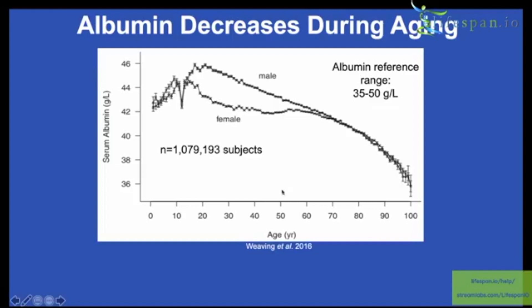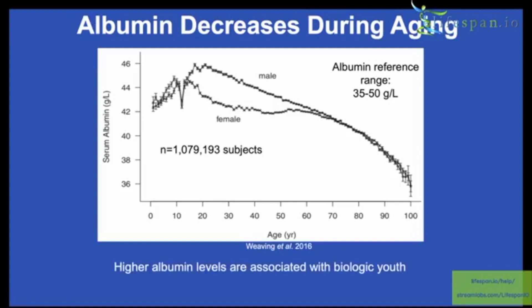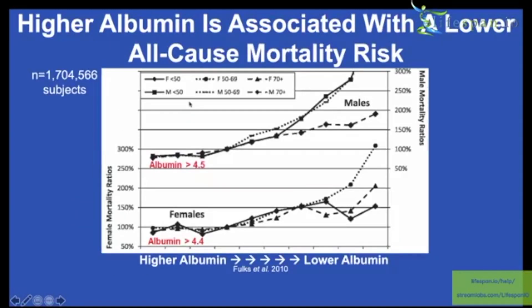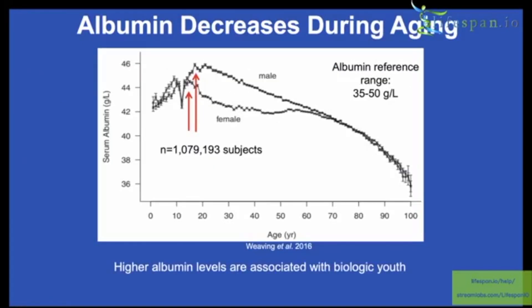For example, this albumin study has a sample size of more than one million subjects. The reference range for albumin is 35 to 50 grams per liter. But what's optimal? Higher albumin levels are associated with biological youth. We can see that here — albumin levels on the y-axis versus age. We can see the female plot and the male plot. Males tend to have higher albumin up until about age 60 or 65 than females. Albumin very clearly decreases with age for both sexes.